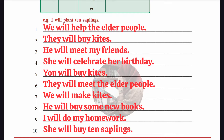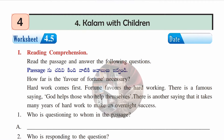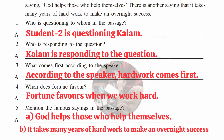Worksheet 4.5, first section: reading comprehension — read the passage and answer the following questions. First: who is questioning whom? Answer — Student 2 is questioning Kalam. Second: who is responding? Answer — Kalam is responding. Third: what comes first according to the speaker? Answer — hard work comes first.